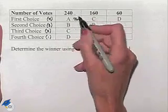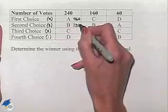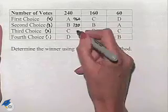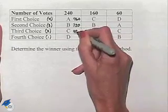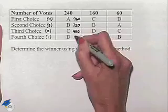Three times 240 gives us 720. Two times 240 gives us 480. One times 240 is 240.